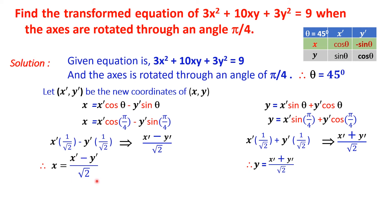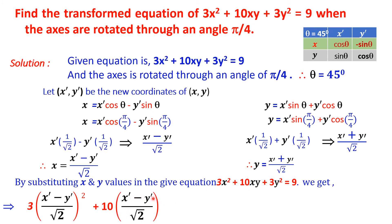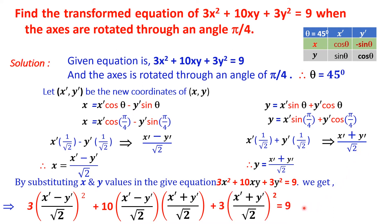Now substituting the values of x and y in the given equation 3x² + 10xy + 3y² = 9. We write 3·[(x' − y')/√2]² + 10·[(x' − y')/√2]·[(x' + y')/√2] + 3·[(x' + y')/√2]² = 9.